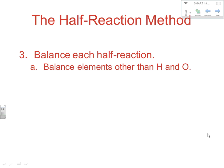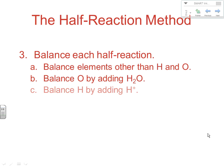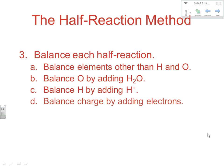From there, we're going to balance each half-reaction, going through a series of steps. First, we're going to balance everything but H's and O's. Then we're going to balance the O's by adding water. To balance the H's, we add H+, which means we're technically looking at these reactions in an acidic environment. Finally, we're going to balance the charge by adding electrons, doing an evaluation of charge to determine where electrons are and whether they're being added or removed.